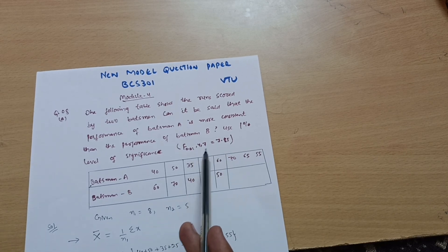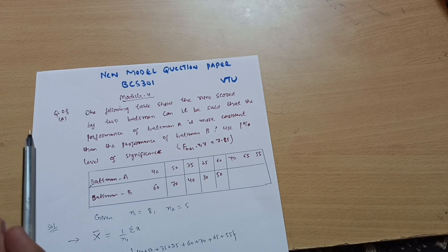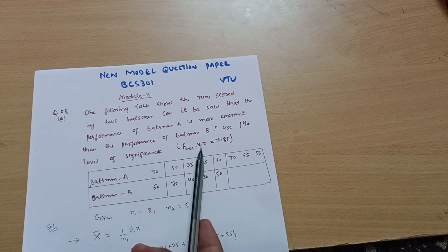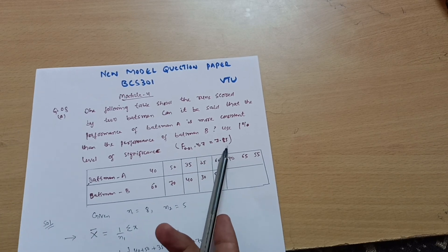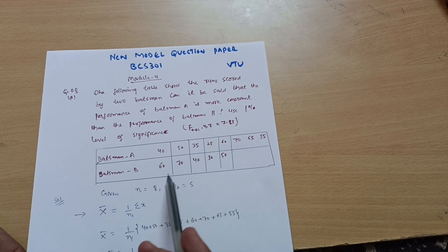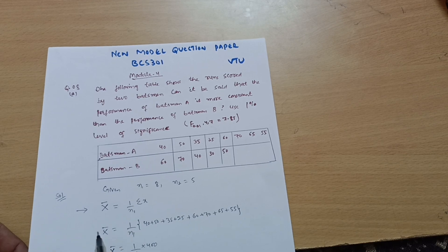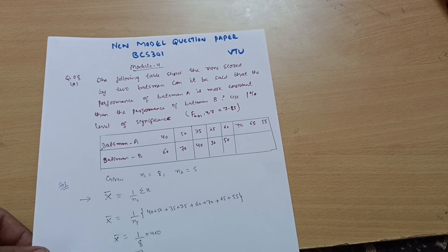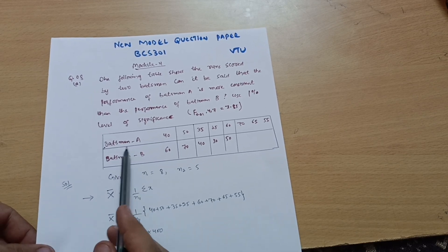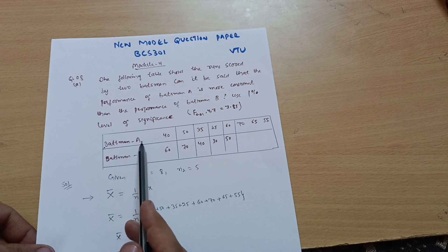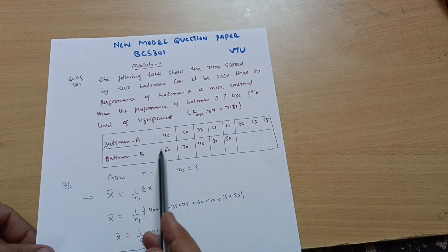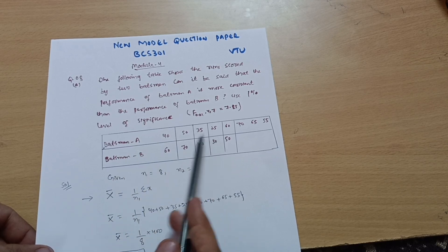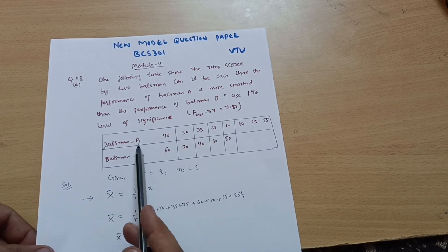We have to check whether the F value is less than or greater than 7.85. If it is less than, the hypothesis will be accepted; if it is greater, the hypothesis is rejected. Here is the table for batsman A and batsman B — these are the runs which they have scored.